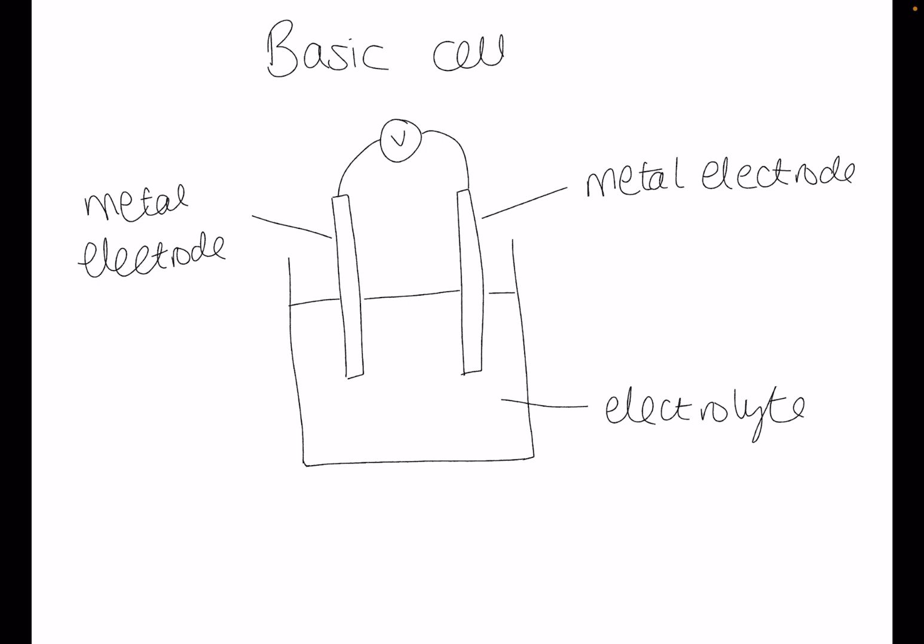Here is a diagram of a basic cell. To make a basic electrochemical cell you need two metal electrodes of different metals. You dip them into a beaker of electrolyte which is an ion solution which will complete the circuit. You then connect the two electrodes together using a voltmeter.